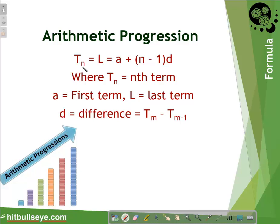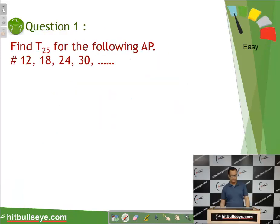The nth term of an arithmetic progression is: tn = a + (n − 1)d, where tn is the nth term, a is the first term, and d is the common difference between consecutive terms. It is very important to note that if we want to find the last term of an arithmetic progression, we use the same formula as for the nth term.